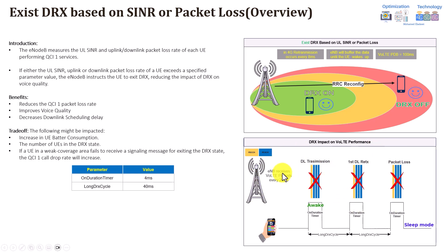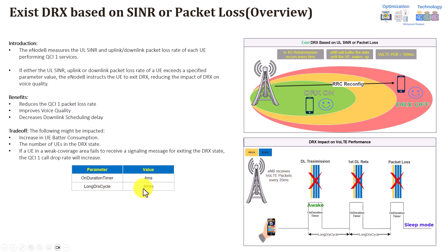Now let's walk through the mechanism. Assuming the eNodeB has already received VoLTE packets and wants to transmit them to the UE in downlink — the packet cannot be transmitted until the user enters the ON Duration state, meaning the user is awake and out of DRX. In this case the eNodeB transmits during ON Duration. Note that VoLTE packets are generated every 20 ms, but since the long DRX cycle is 40 ms, the eNodeB buffers two packets and transmits them when the user wakes up during the 4 ms ON Duration timer.